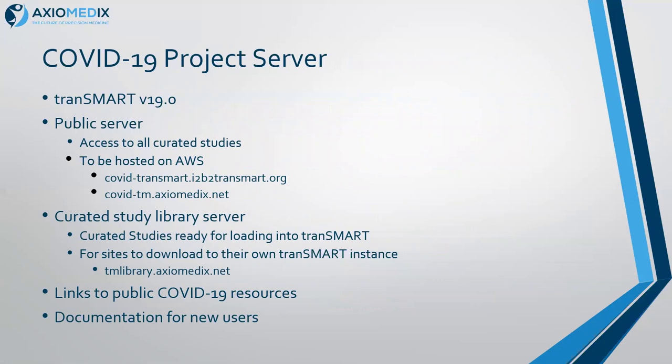It'll be a Transmark 19 server using the latest release, a public server hosted on AWS through the ITB2 Transmark Foundation. We'll have a staging server at Axiom edX where we'll have the studies going through the curation process, and the community can help us review them. There'll also be a library server where we'll put all the data up for download to individual local instances. We'll add links to other public COVID resources, of which there are many emerging, and extra documentation for new users who will be completely new to Transmark.